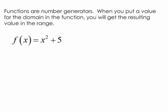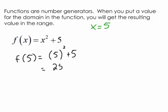Here's a simple function: f of x equals x squared plus 5. We could put in a value in the domain of x equals 5. That takes this function generator and changes all of the x's to 5's. Then we do the calculation: 5 squared is 25 plus 5, and we get 30 — a value for the range. Choose a different x value, we'll get a different y value, a different range value.